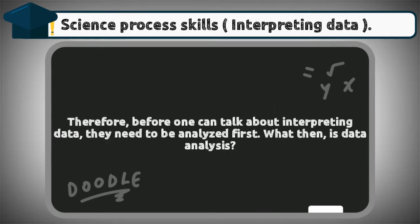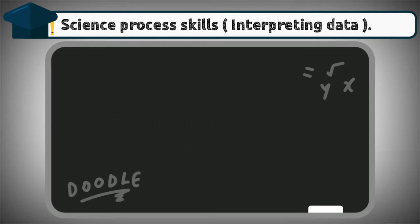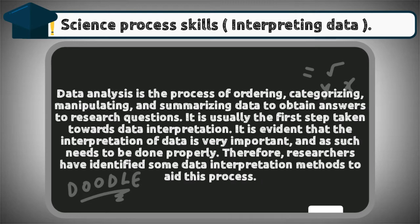Therefore, before one can talk about interpreting data, they need to be analyzed first. What then is data analysis? Data analysis is the process of ordering, categorizing, manipulating, and summarizing data to obtain answers to research questions. It is usually the first step taken towards data interpretation.